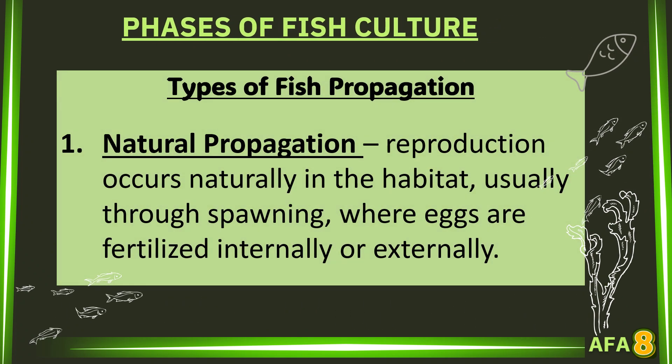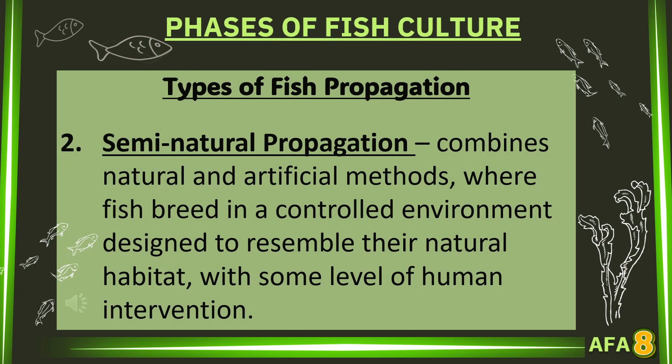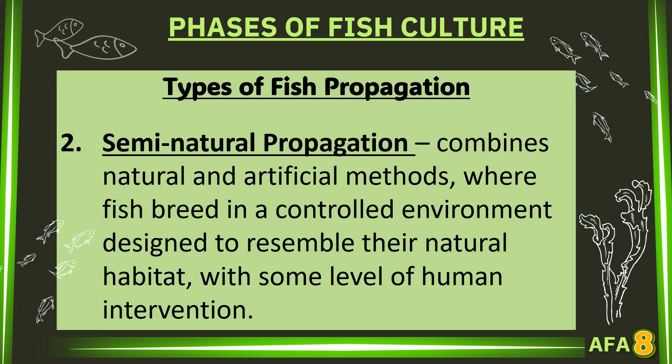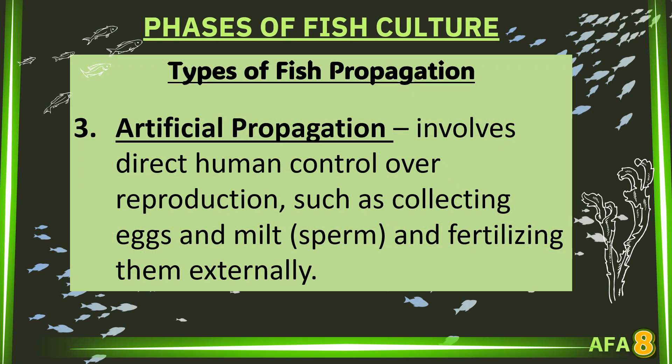The types of fish propagation. The first type is natural propagation, where reproduction occurs naturally in the habitat, usually through spawning, where eggs are fertilized internally or externally. Semi-natural propagation combines natural and artificial methods, where fish breed in a controlled environment designed to resemble their natural habitat, with some level of human intervention. Artificial propagation involves direct human control over reproduction, such as collecting eggs and milt (sperm) and fertilizing them externally.